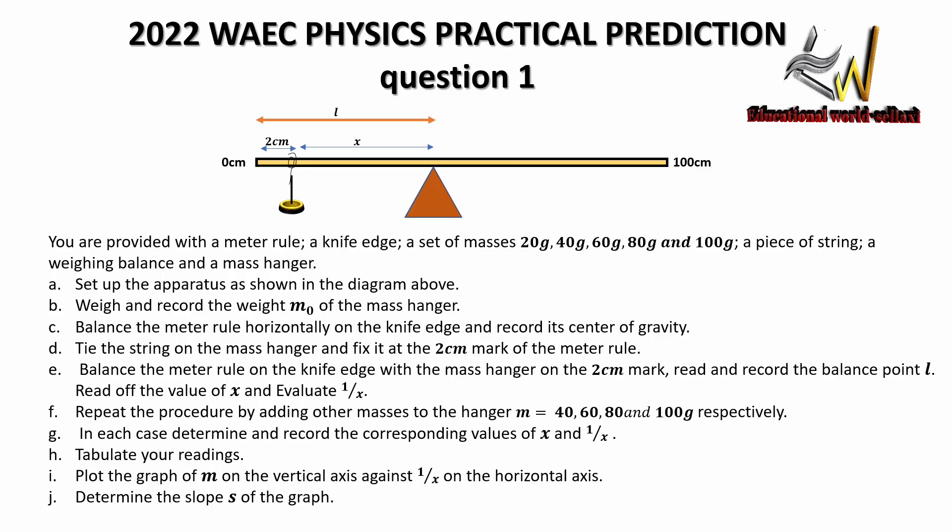Set up the apparatus as shown in the diagram. Weigh and record the weight M₀ of the mass hanger. Balance the meter rule horizontally on the knife edge and record the center of gravity. Tie the string on the mass hanger and fix it at the 2 cm mark of the meter rule. Balance the meter rule on the knife edge with the mass hanger on the 2 cm mark. Read and record the balance point L, read off the value of x, and evaluate the inverse of x.